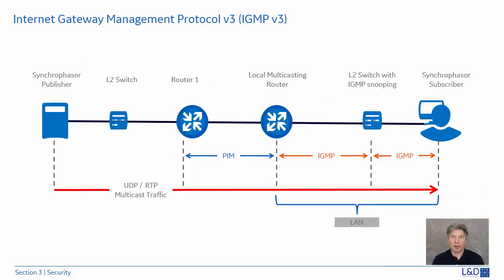To ensure the subscribers are getting the right data, the standard specifies that when multicasting over IP networks, IGMP version 3, or Internet Group Management Protocol, must be used. IGMP version 3 differs from earlier versions in that the subscribers to the multicast address are filtered on the source IP address of the publisher. This is referred to as source filtering.